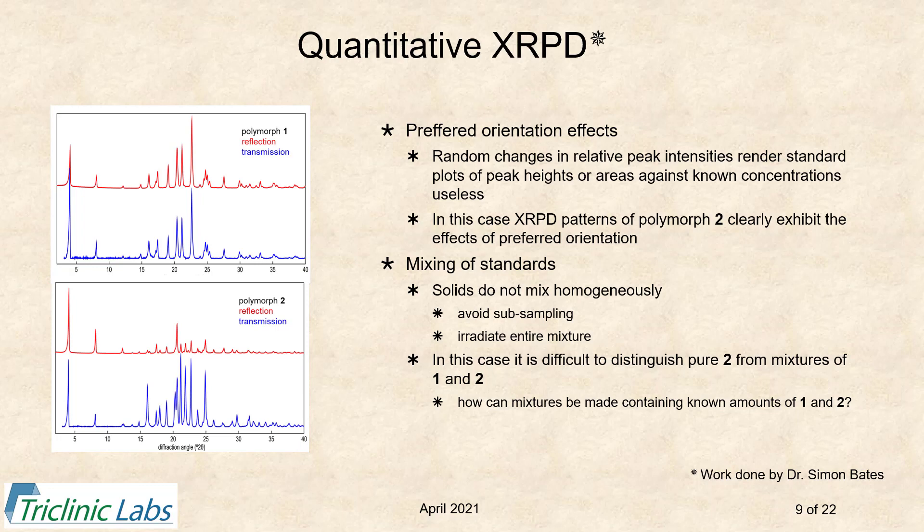Probably the biggest problem in this kind of work is the inability to prepare standard mixtures. Solid mixtures are notoriously inhomogeneous, so we must avoid subsampling unless it can be shown experimentally that it can be done. Also, the phase purity of starting materials needs to be established—in this case, the inability to readily distinguish polymorph two from mixtures of polymorph two and polymorph one is an example of that unknown phase purity challenge.